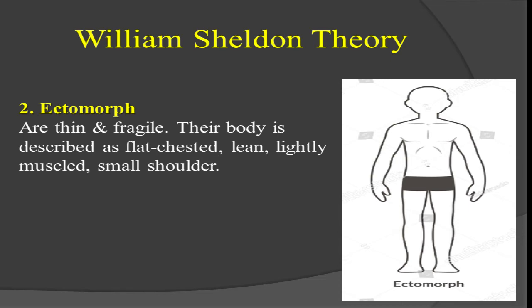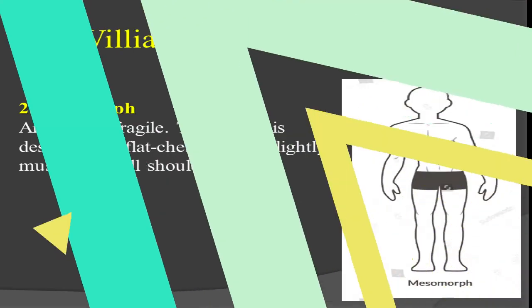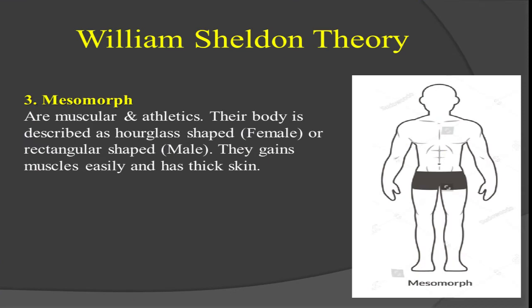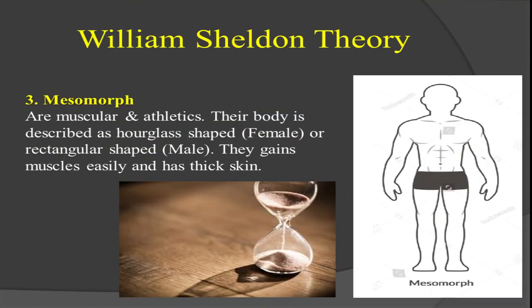The third body type according to William Sheldon is mesomorphic. Mesomorphs are muscular and athletic — people who are very strong, muscular, energetic, and athletic. For females, their body is described as hourglass-shaped, as mentioned by William Sheldon.